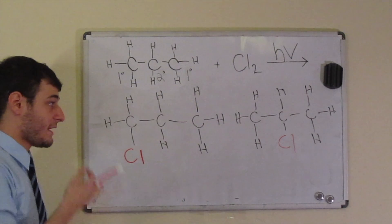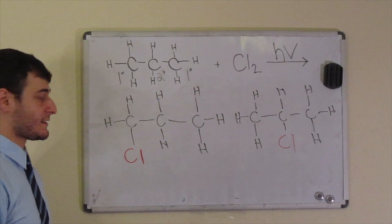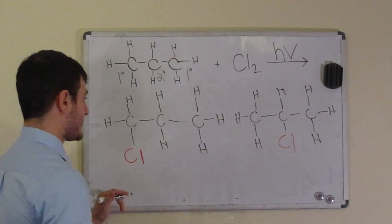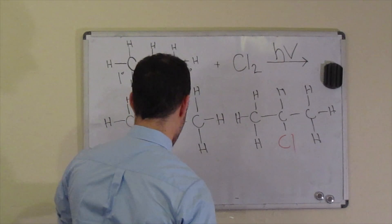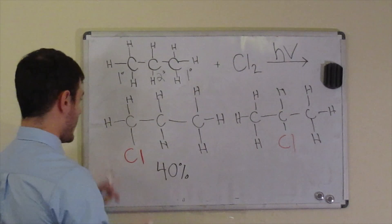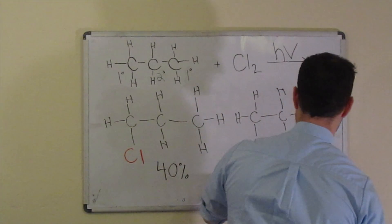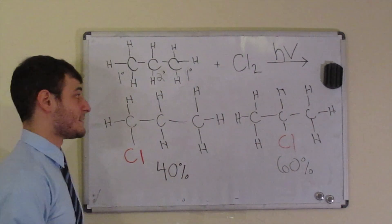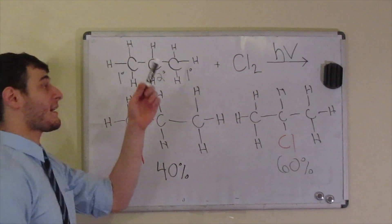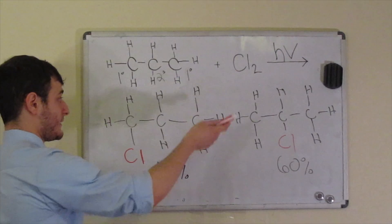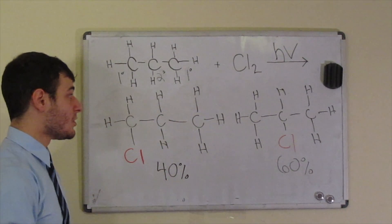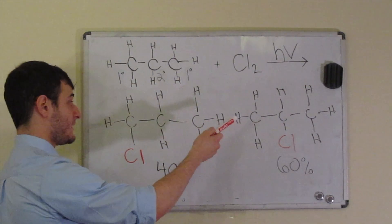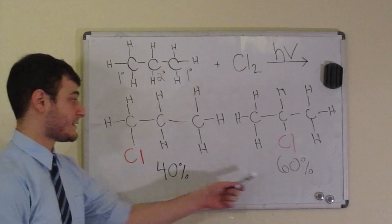And when you actually do this reaction, these two are going to be your major products. And we're only going to pay attention to these products where it only substitutes once. And the relative amounts are going to be 40% of your primary substitution and you're going to get 60% of the secondary. And you know that in the mechanism, the radical is going to abstract a hydrogen to make room for the chlorine to be added onto the carbon. So we may say that the secondary hydrogens have some sort of reactivity compared to the primary hydrogens. And that's going to lead to this disparity here.